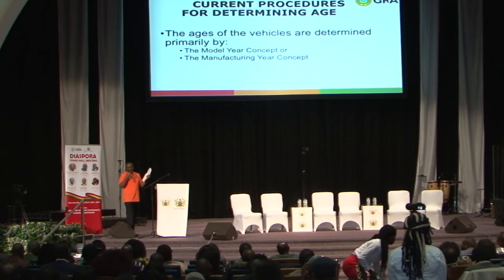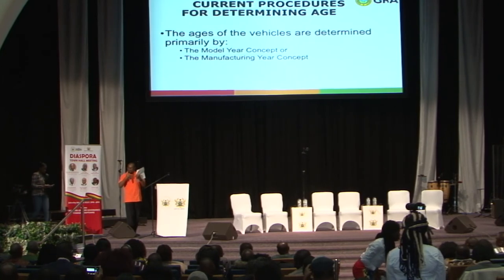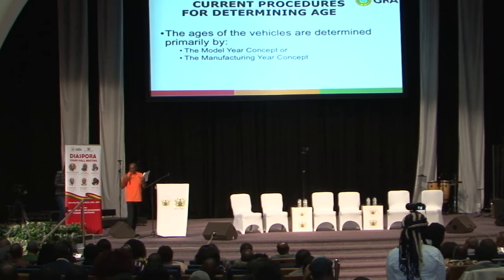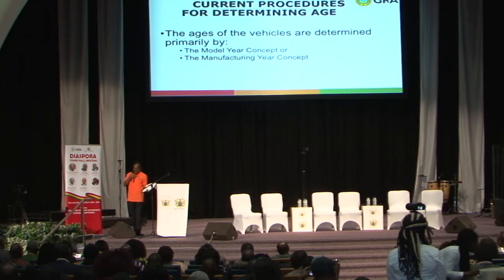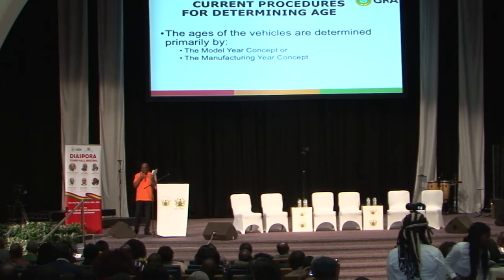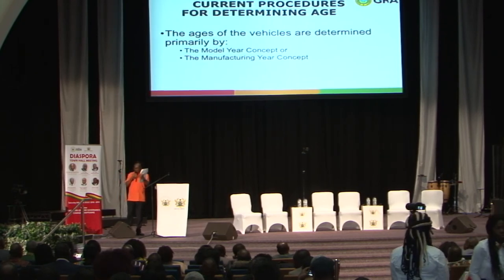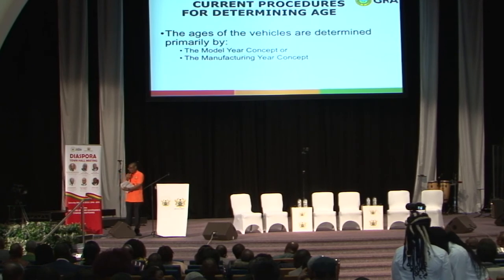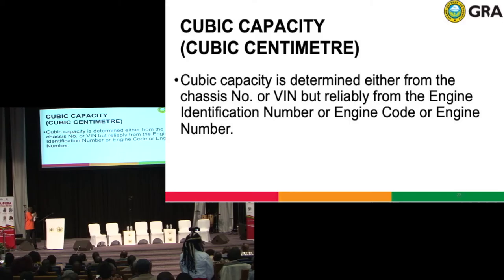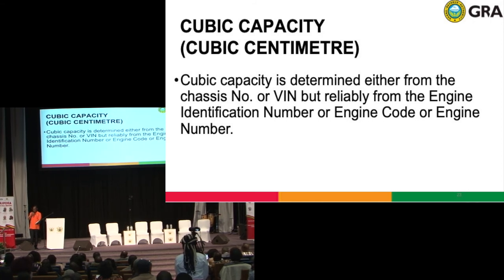How do we determine the age of the vehicle? We take the VIN or chassis number and decode it to determine the vehicle's age. For model-year vehicles, the 10th character tells you the age. For manufacturer-year vehicles, it is based on successive productions, and we have a chart to determine this. The cubic capacity can be decoded from the engine code or chassis number — sometimes the 4th or 5th character will tell you, and the 10th character gives you the age.